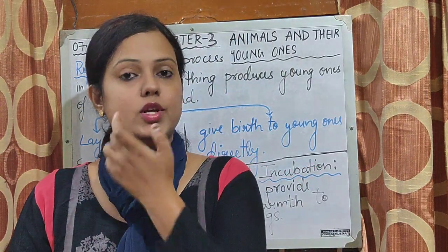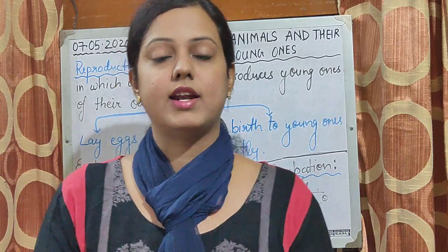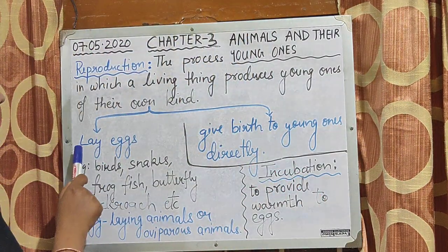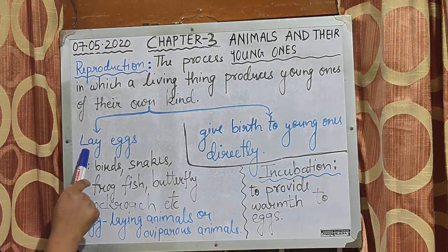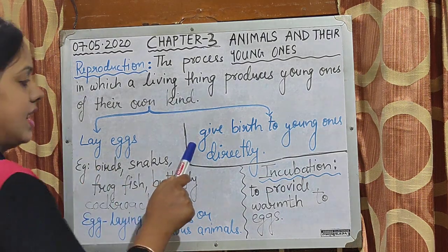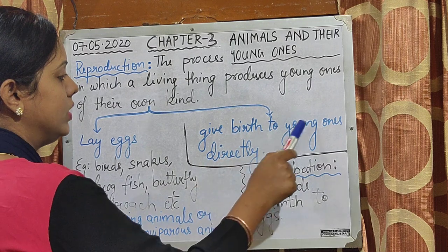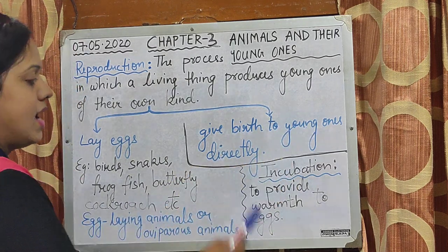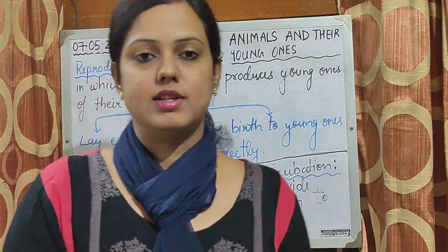Now animals reproduce in two ways. The first is animals reproduce by laying eggs. The second method is they give birth to young ones directly. Like in case of mammals — human beings, cow, dog — do they lay eggs? No. They give birth to young ones directly.